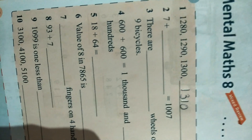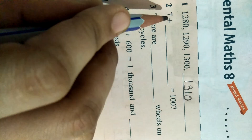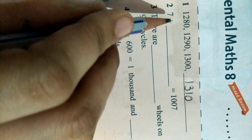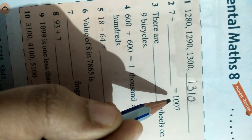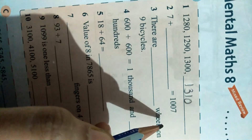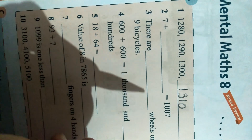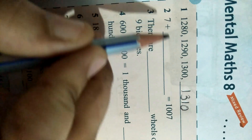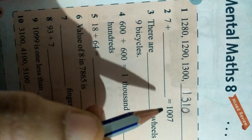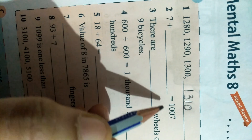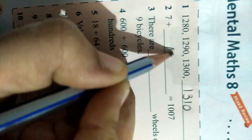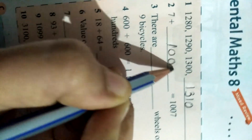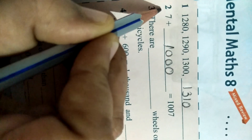Next: 7 plus dash number is equal to 1007. So basically it is very easy — 7 plus which number will become 1007? We are going to add 1000. So 7 plus 1000 is equal to 1007.